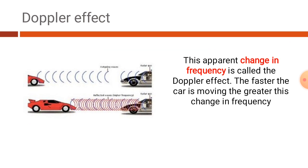When the car moves towards you the frequency increases; when the car moves away from you the frequency decreases. So there is a shift in the range of frequency. The faster the car is moving, the greater this change in frequency is. If the car is moving faster the sound is higher, and if the car is moving slower the sound is lower.